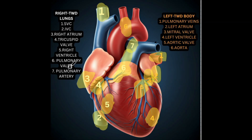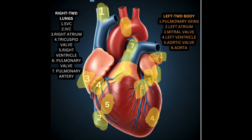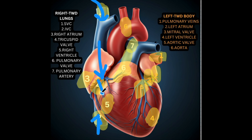Here's a simple flow showing the flow of blood throughout the heart. Blood enters the vena cavas — superior and inferior — as deoxygenated blood, into the right atrium, through the tricuspid valve, into the right ventricle, where it will then be pumped through the pulmonary valve, through the pulmonary artery, and to the lungs.